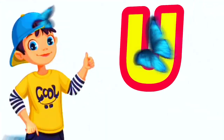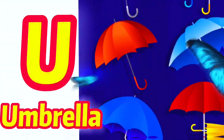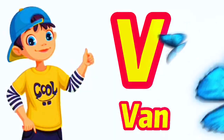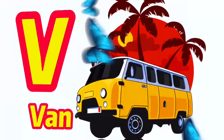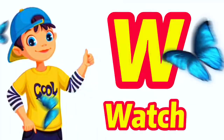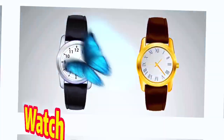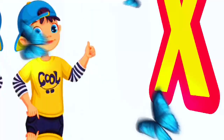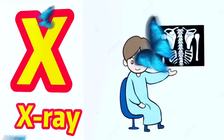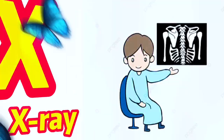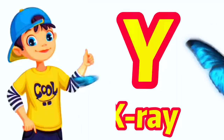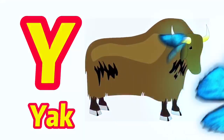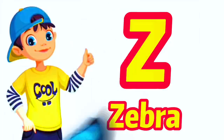U for umbrella, V for well, W for vhach, X for x-ray, Y for yak, Z for zebra.